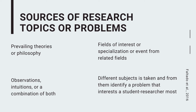Since research can be found in our daily life, the things we observe and our ideas and thoughts can also be sources of our research problem. Another source is the different subjects taken — from them, identify a problem that interests a student researcher the most. Since we are in a school setting for research writing, problems identified in each subject are very helpful and vary widely, making them good sources of research problems.